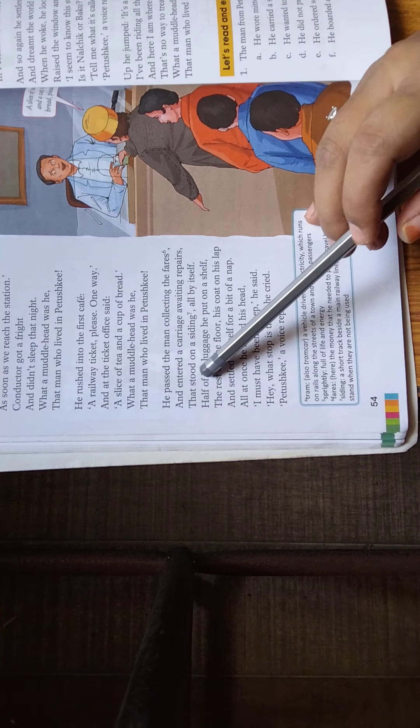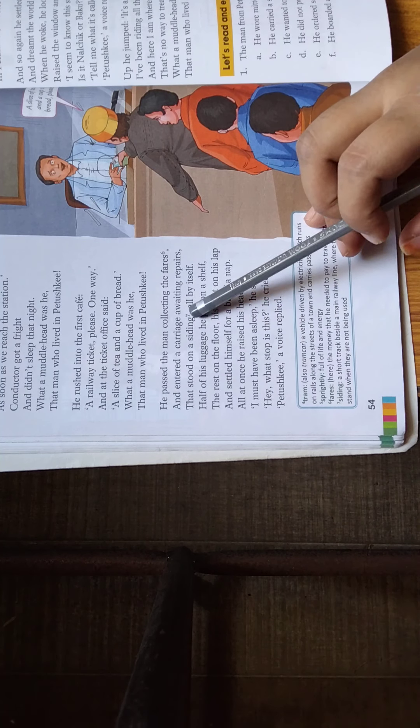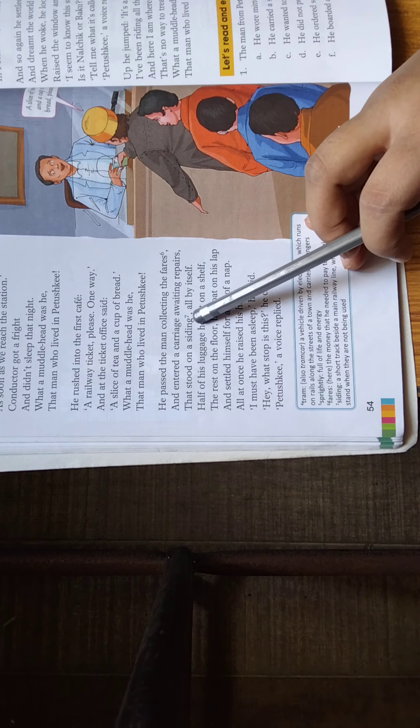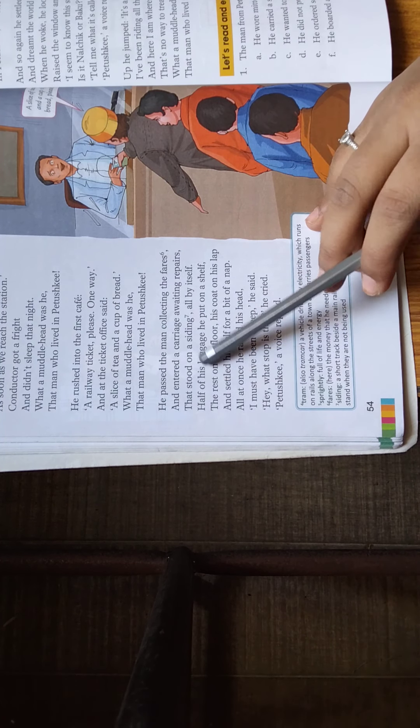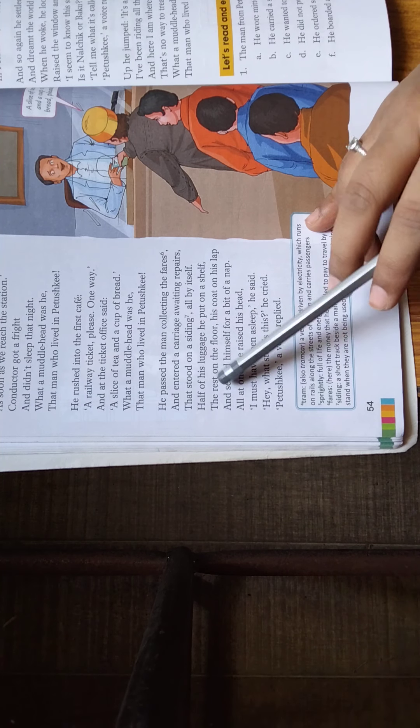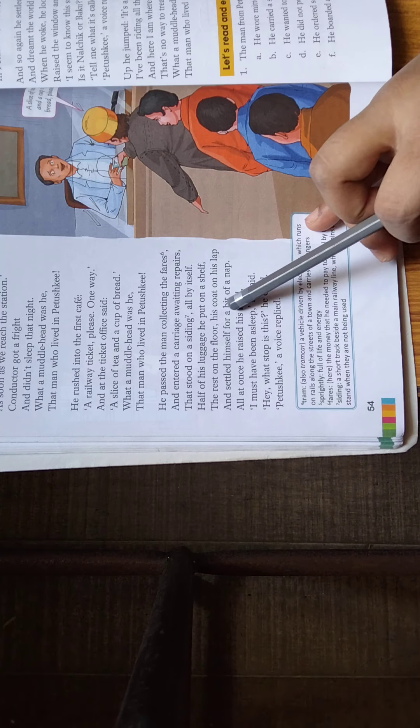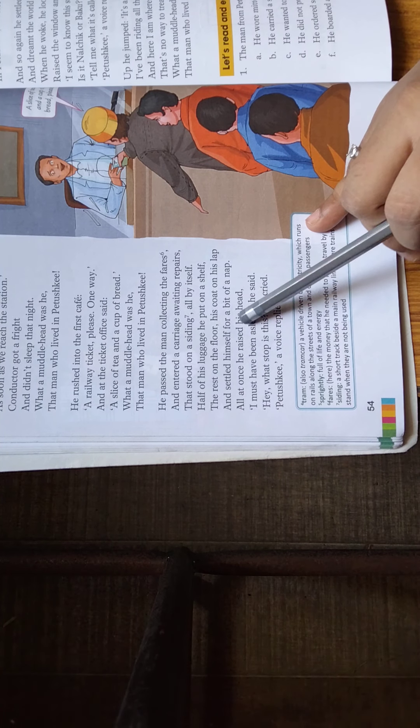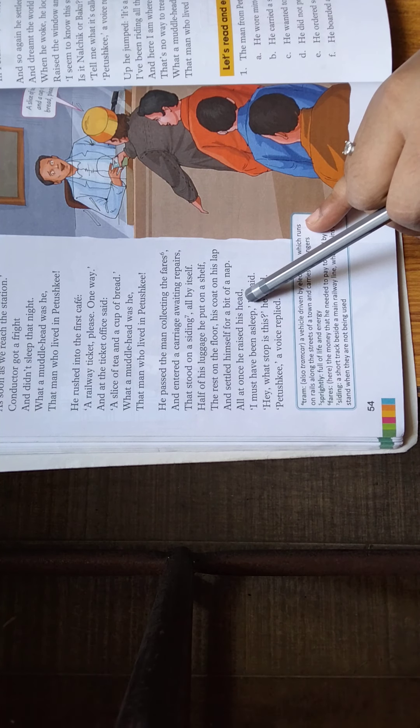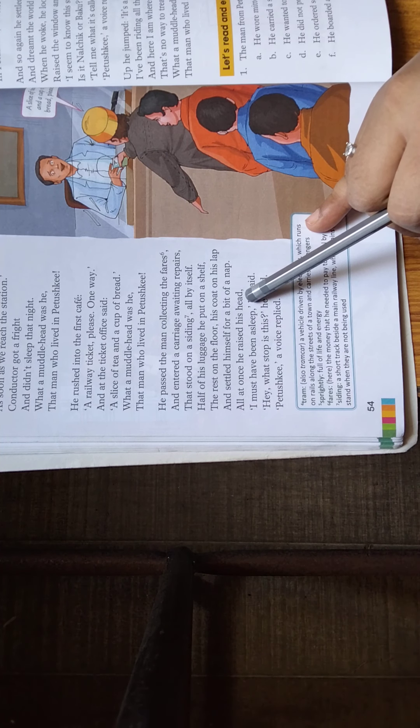He passed the man collecting the fares and entered a carriage that stood on the siding by itself. Half of his luggage he put on a shelf, the rest on the floor, his coat on his lap, and settled himself for a bit of a nap. फिर वो train के अंदर गया, उसने आधा अपना luggage ऊपर रखा, आधा नीचे रखा और खुद वहाँ पे सो गया.